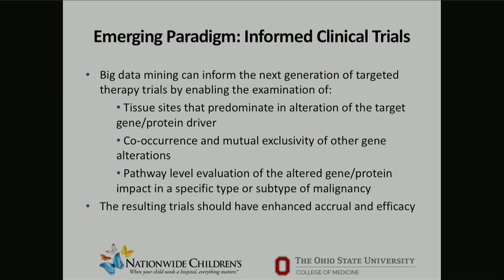Co-occurrence and mutual exclusivity can really only be obtained by examining very large data sets, including information from structural alteration and copy number at the DNA level. Pathway-level evaluation may be a better way to look at this, because our focused drugs are really not just focused on a specific altered protein, but on the pathway you want to shut down that's driving the cancer. The resulting trials, by applying big data to design the trial paradigm, might have enhanced accrual and efficacy, because by modeling your accrual in different tissue sites with big data, you can better design your trial.